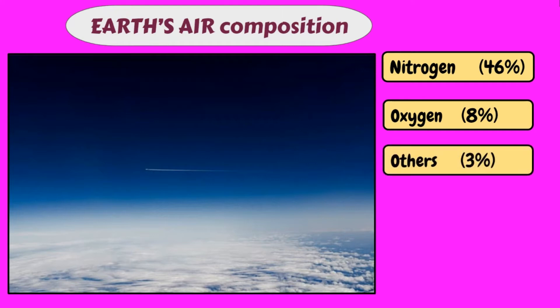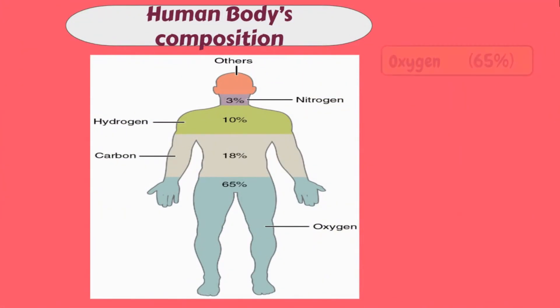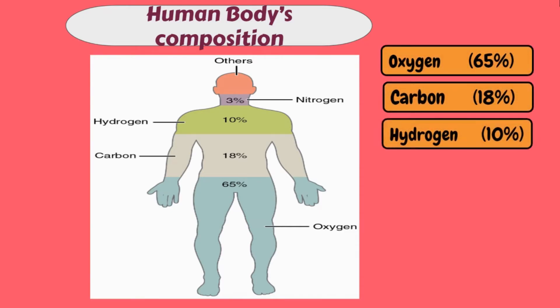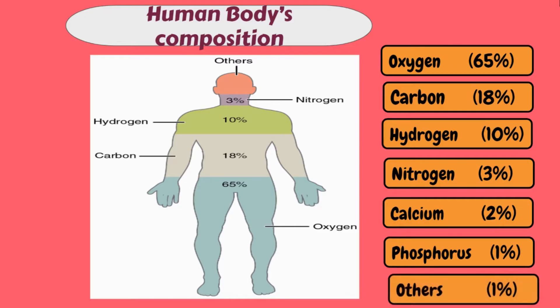And for the human body, 65% oxygen, 18% carbon, 10% hydrogen, 3% nitrogen, 2% calcium, 1% phosphorus, and 1% for other elements.